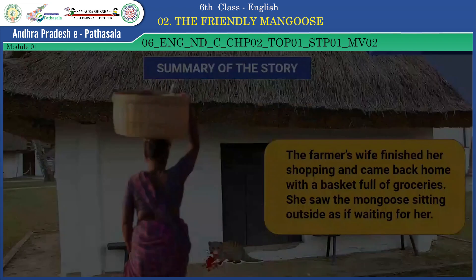The farmer's wife took one look at the mongoose and screamed, 'Blood!' she cried. The face and paws of the mongoose were smeared with blood. 'You wicked animal! You have killed my baby!' she screamed hysterically. She was blind with rage and with all her strength, brought down the heavy basket full of groceries on the blood-smeared mongoose and ran inside to see the child's cradle. The baby was fast asleep, but on the floor lay a black snake, torn and bleeding. In a flash, she realized what had happened.